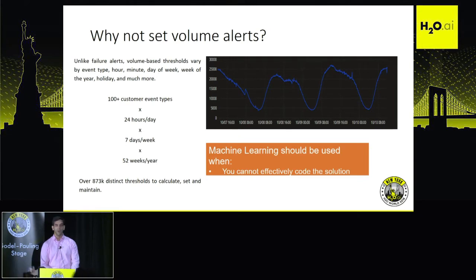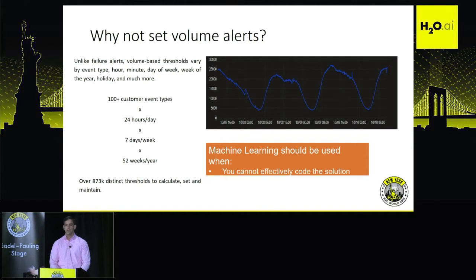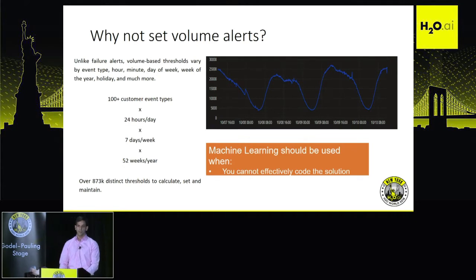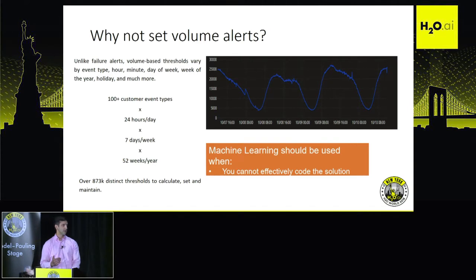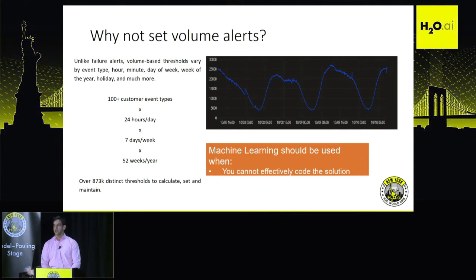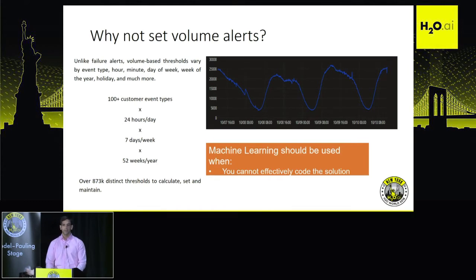Why not just set volume alerts? You could do this if you're looking for failures with a certain threshold for a spike. But if you're looking to set volume alerts for any threshold, you have to set it for hundreds of different transactions across mobile and web applications. You'd have to account for the time of day, day of week, week of year, and it easily gets up to close to a million or more depending on the scale of transactions or platforms. It's not sustainable, not something you can really manage, and this is where we brought in machine learning as our solution.